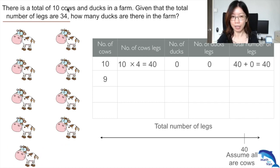Now with 9 cows, I would have 9 times 4 equals 36 legs. But remember, you always need to replace it with a duck because at all times there must be 10 animals. So let's welcome the duck.